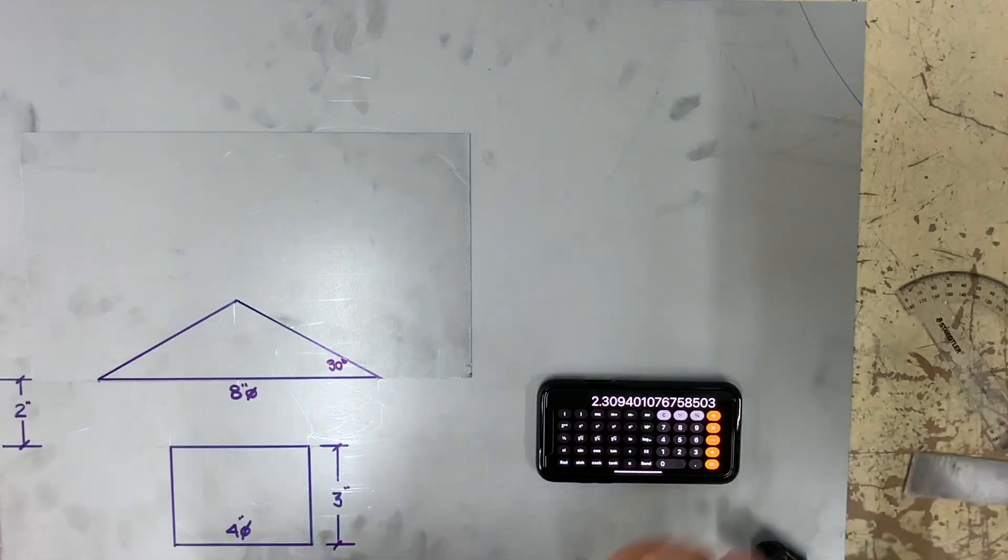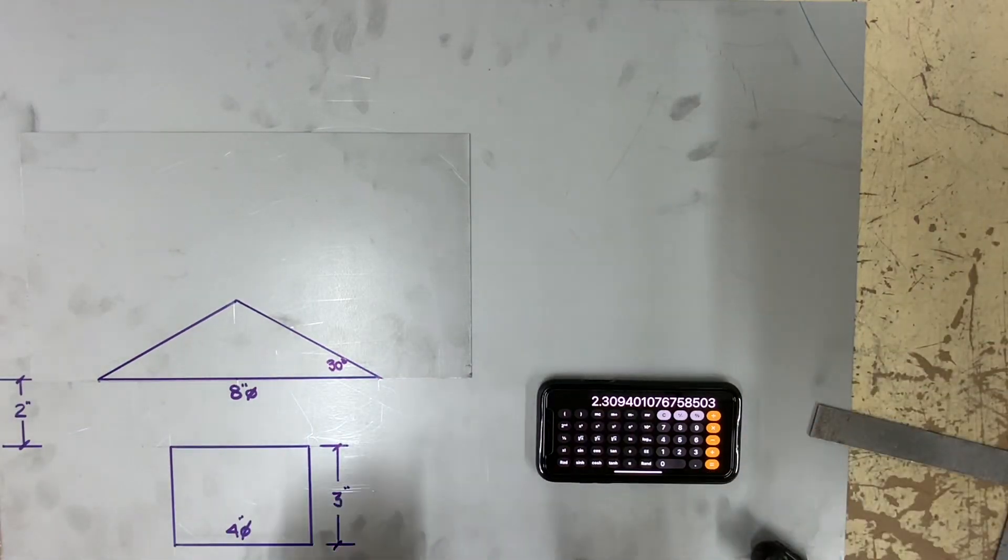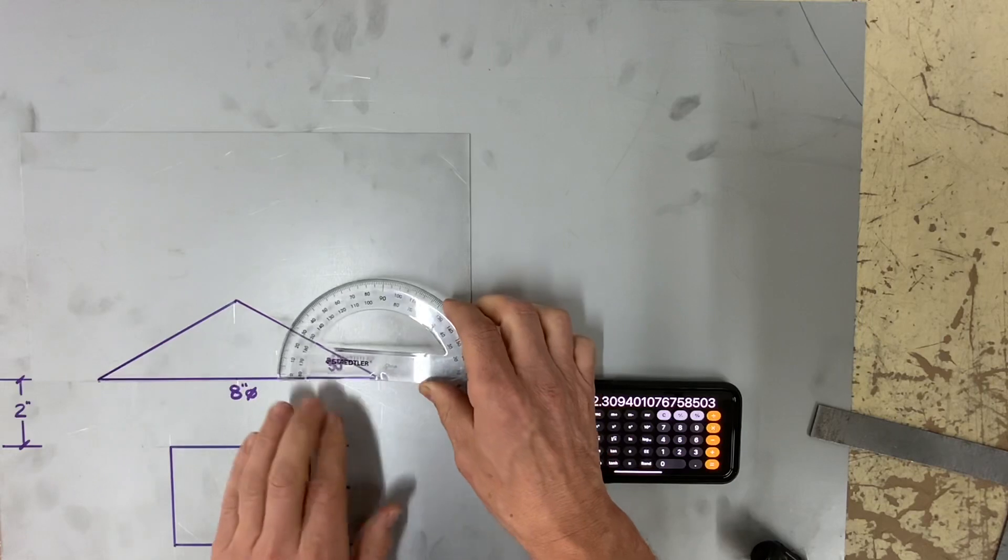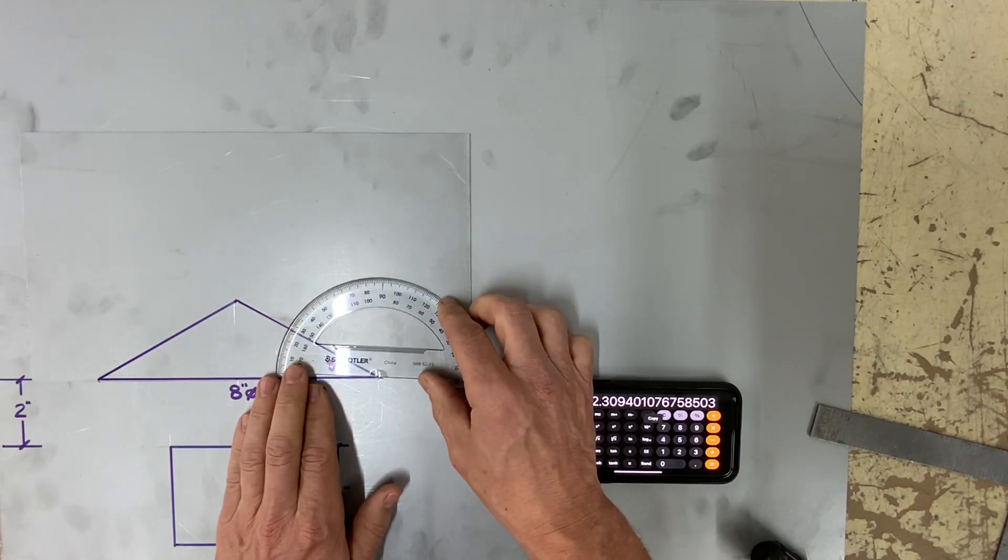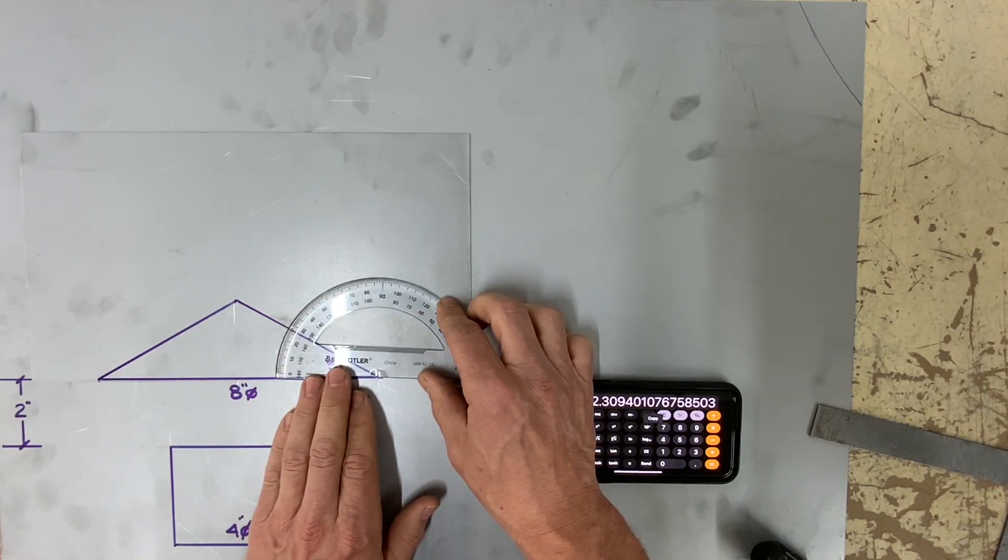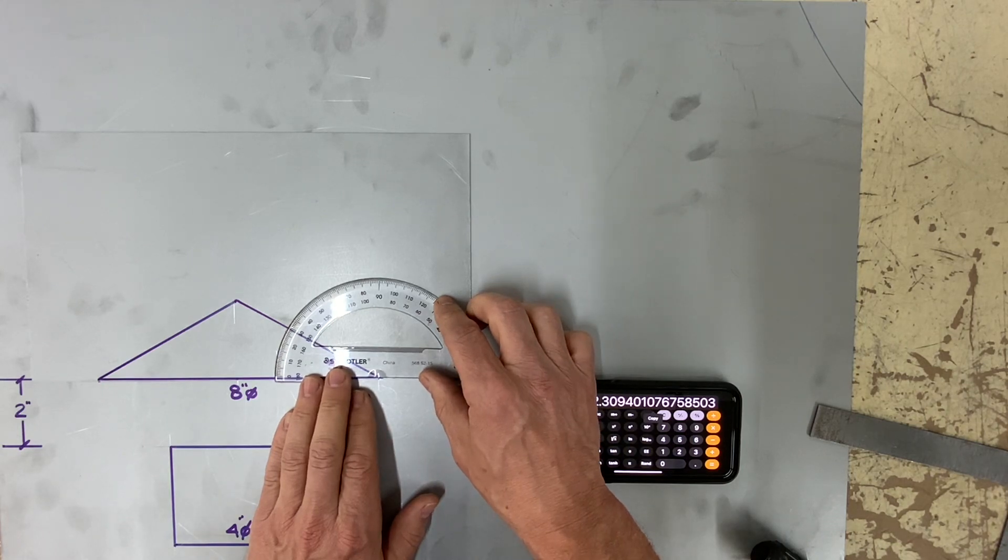Again, that was tangent 30 times four would give you your opposite, which was 2.309. And let's go ahead, check out and see if we have 30 degrees.